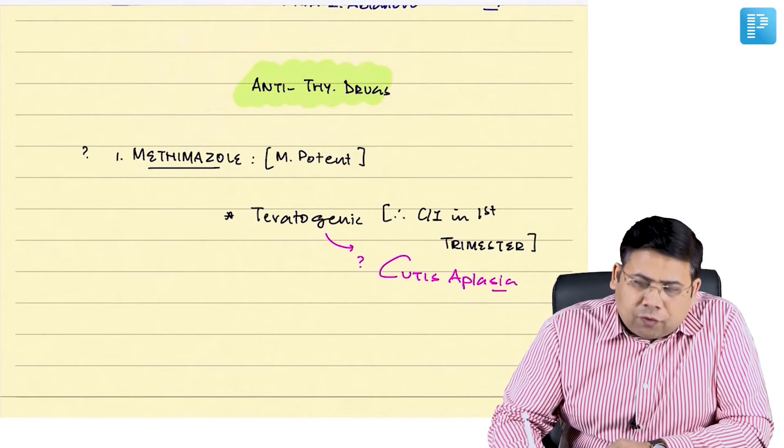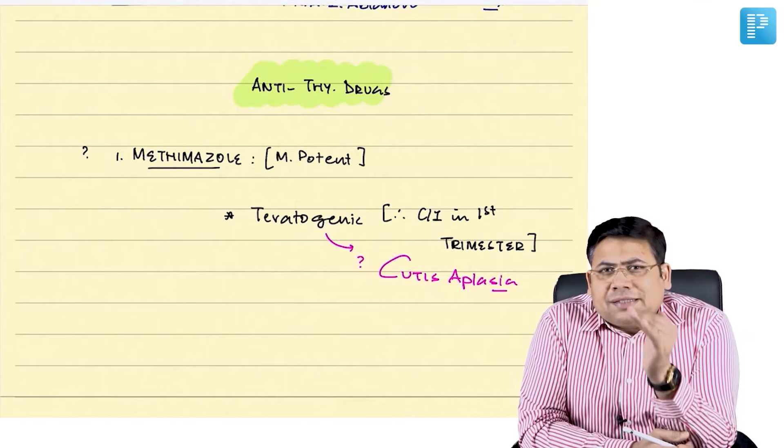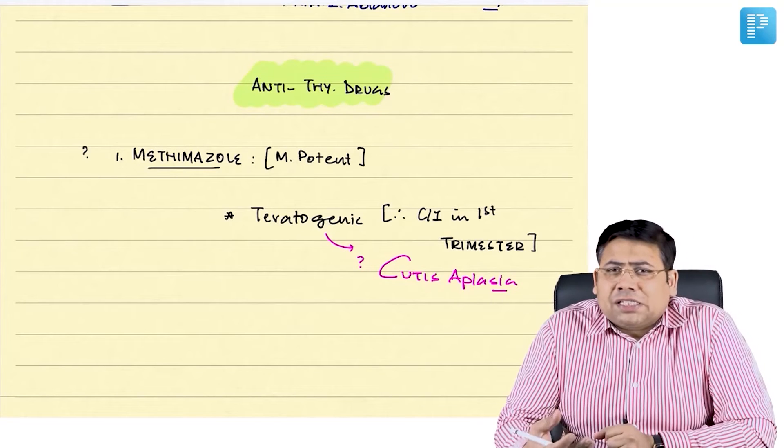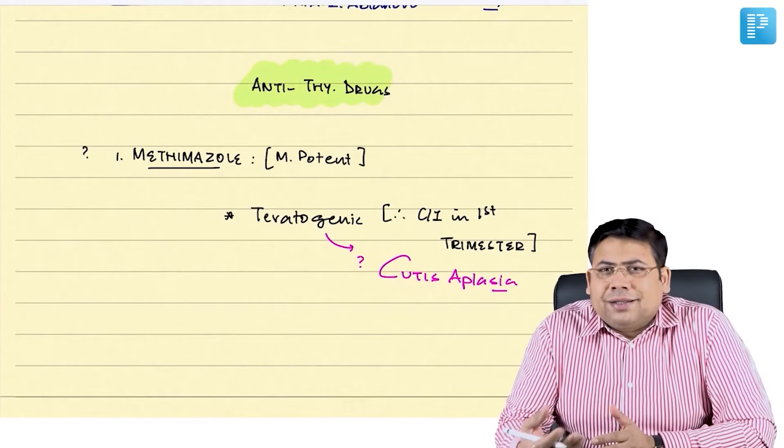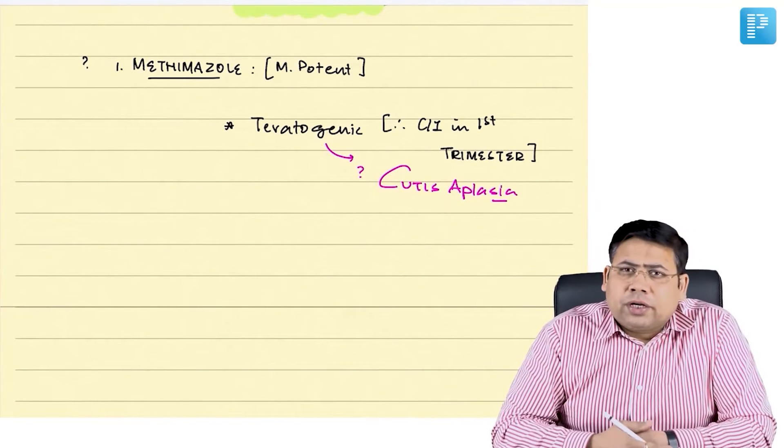They are the most potent of all, you start with 10 mg once daily, you can increase the dosing up to 40 mg a day. And they are generally given as once a day unless it is severe hyperthyroidism. So, teratogenic, they are most potent.